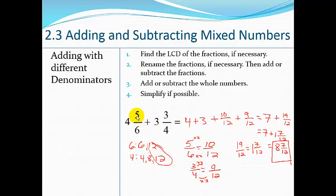You could always estimate to help you out. This is close to 1—if it was 6/6 it would be 1—so this would be closer to 5. Then 3 and 3/4 is almost close to 4, so 5 plus 4 gives you 9 if you're estimating. You know your answer's around 9, and it's a little bit less because we rounded up.